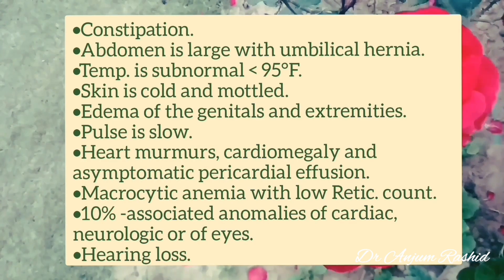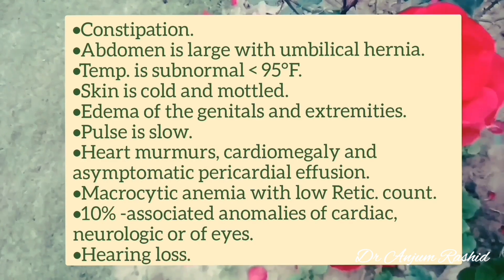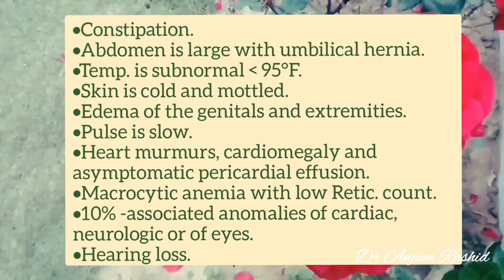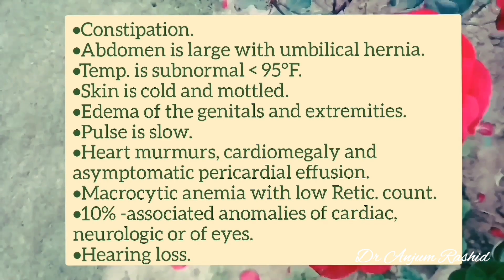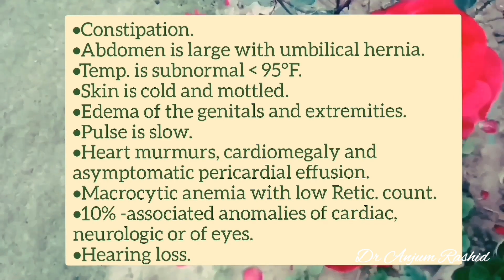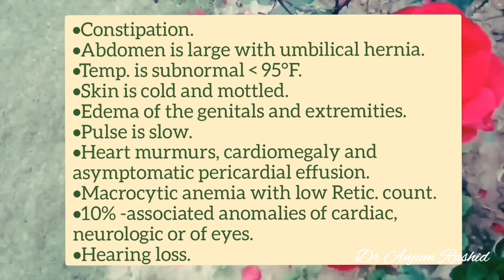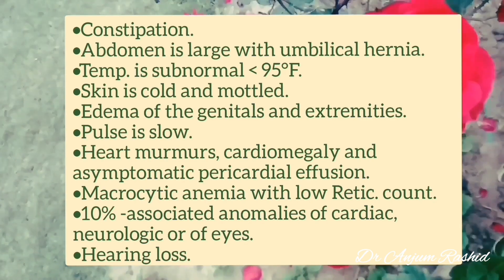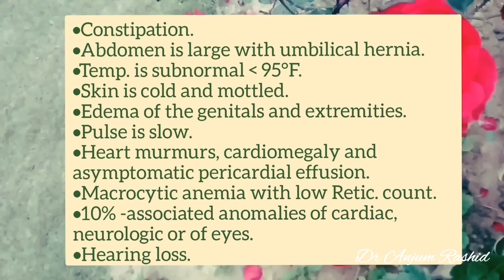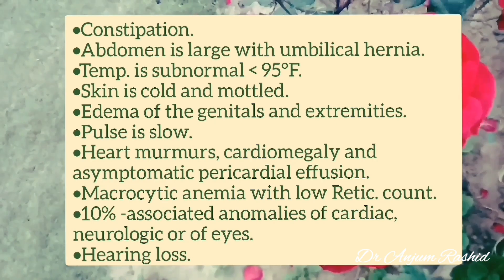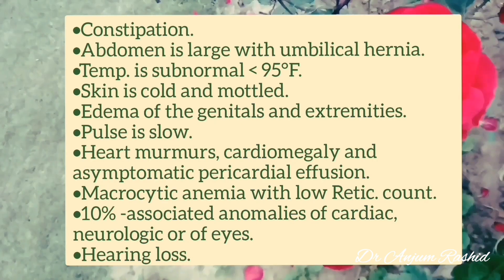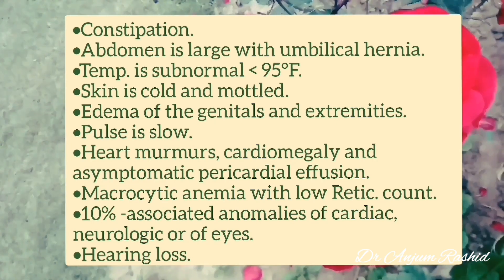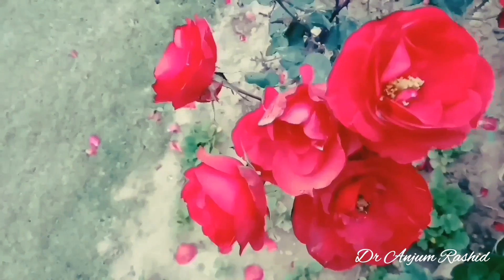There may be edema of the genitals and extremities. Pulse is slow. There may be heart murmurs, cardiomegaly, and asymptomatic pericardial effusion on cardiovascular examination. There is macrocytic anemia with low reticulocyte count. In 10% of cases of congenital hypothyroidism, there may be congenital heart disease or neurological or eye anomalies, and there may be hearing loss.